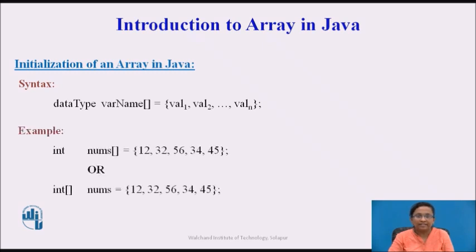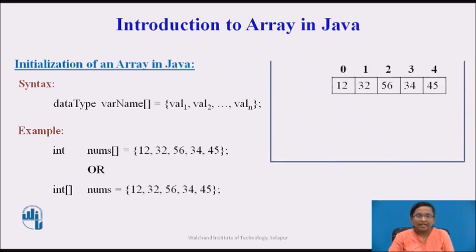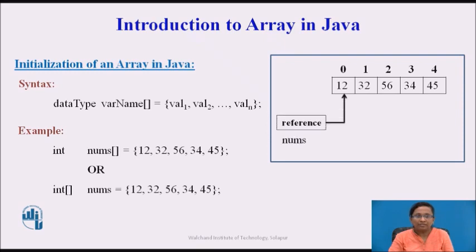Here is an example. Both lines of code initialize the array nums with the values 12, 32, 56, 34, and 45. We are accessing these individual elements using an index — in this example, from 0 to 4 — using the array reference variable.